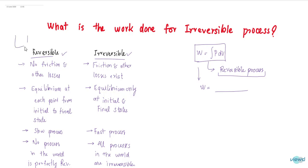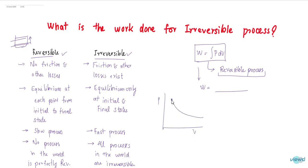That means in a reversible process, if a piston goes from here to here, and if you remove the load and it again reaches its original position, that is called a reversible process. Irreversible process means friction and other losses exist — the system does not reach its original position. In a reversible process, there is equilibrium at each point from initial to final state. If you draw a graph between P and V, at every point the system is in equilibrium up to the final state. This is the case for reversible process.